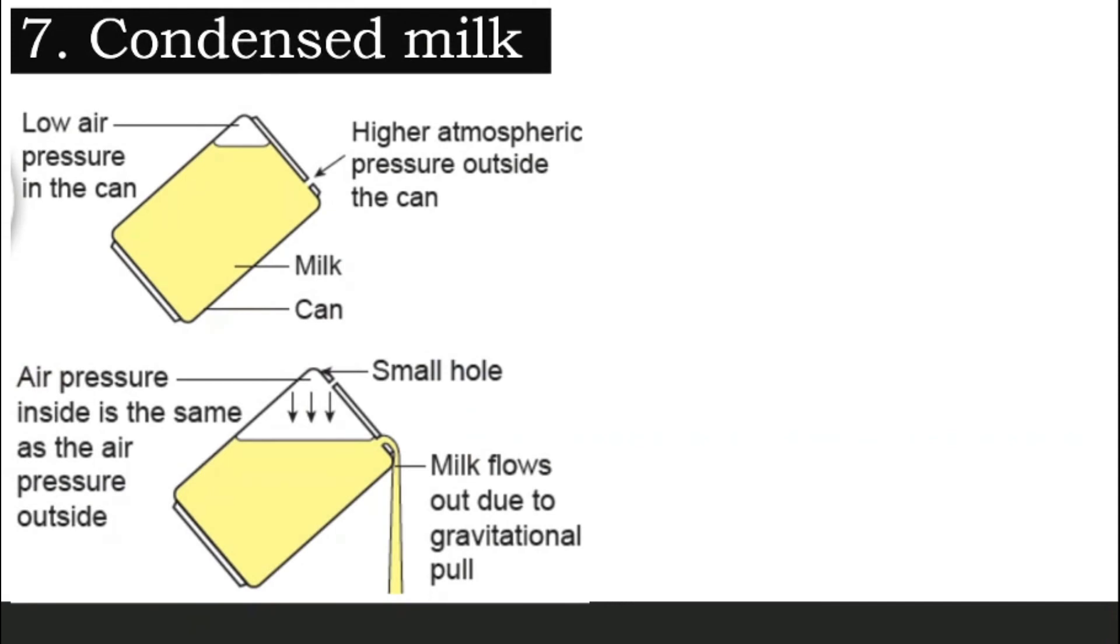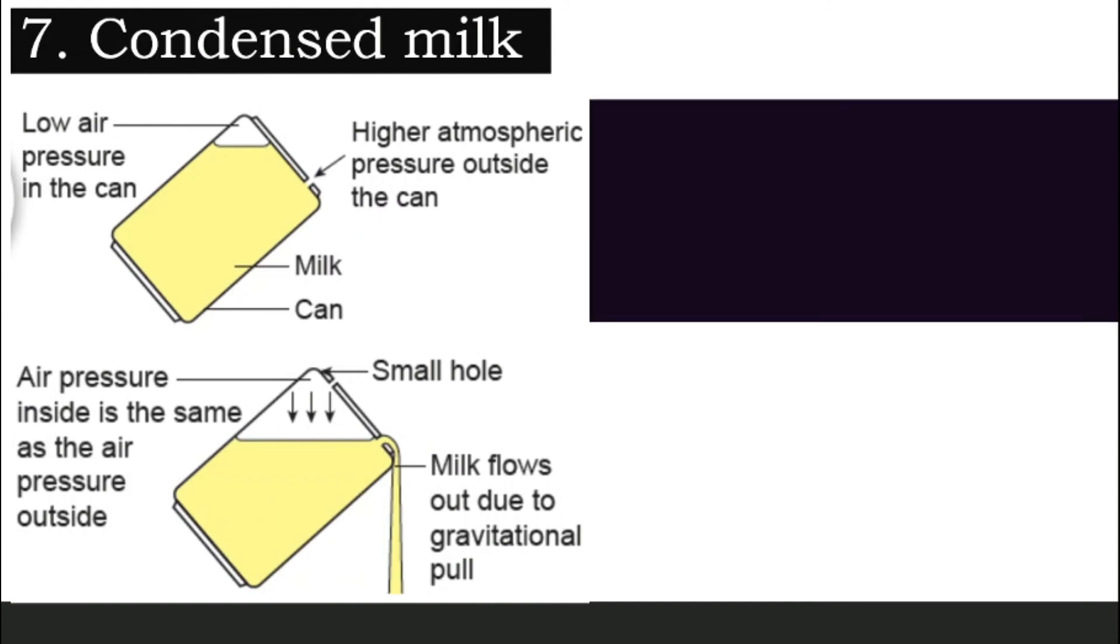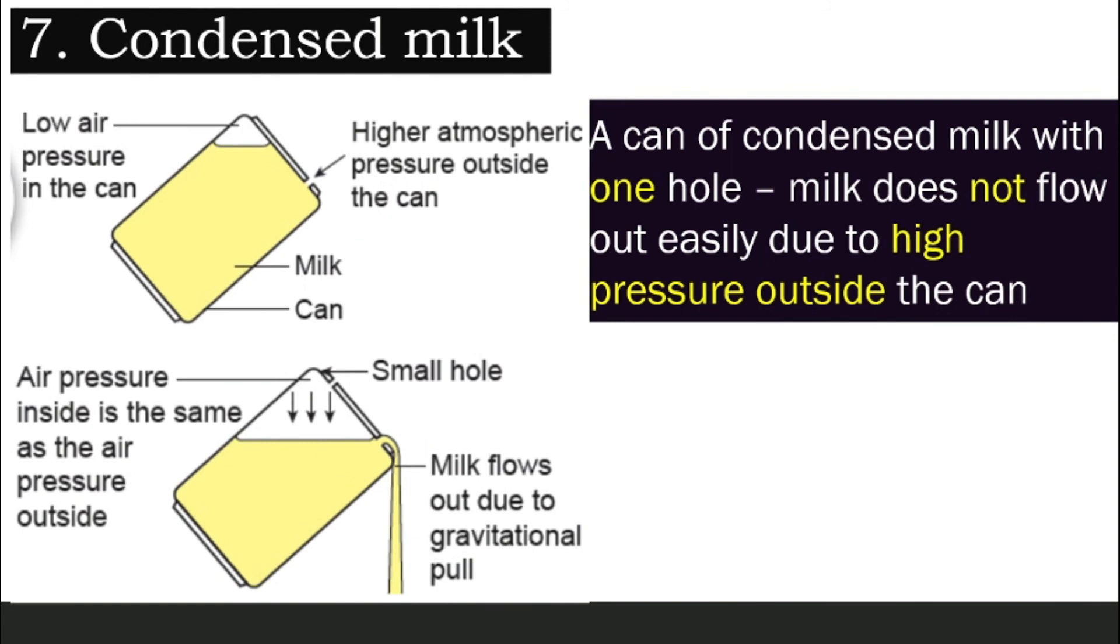Example number seven is very important, especially if you are in form three, PT3, this is a popular question. Even form two, I'm sure a lot of teachers like to ask this question. So pay close attention. When you open a can of condensed milk and you poke only one hole, what happens? Actually, the milk will not flow out easily. Why? When you only have one hole here, as the milk flows out, you create a bigger space here for the air.